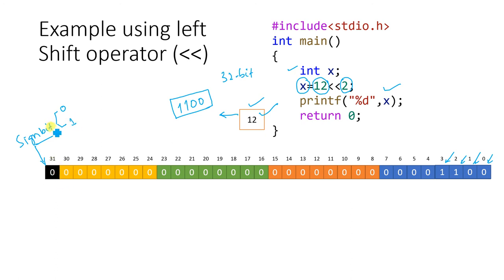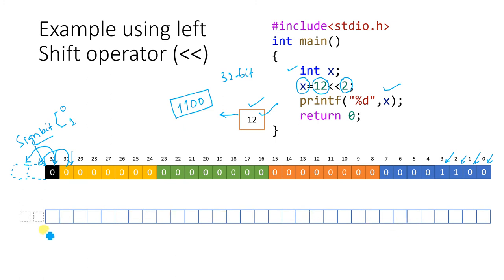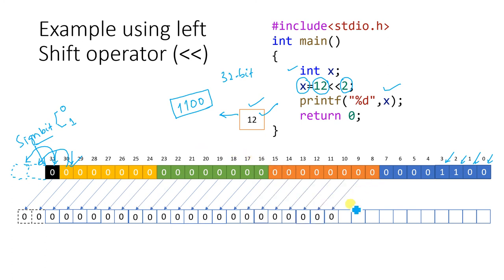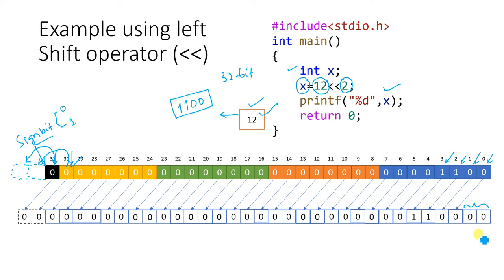Now we have to shift every bit two positions towards the left. I draw two extra dotted boxes on the left side to mark the shifting. Every bit is shifted two positions to the left. After shifting all bits two positions left, you can see two empty boxes remain on the right side. These two empty boxes are filled with zeros.